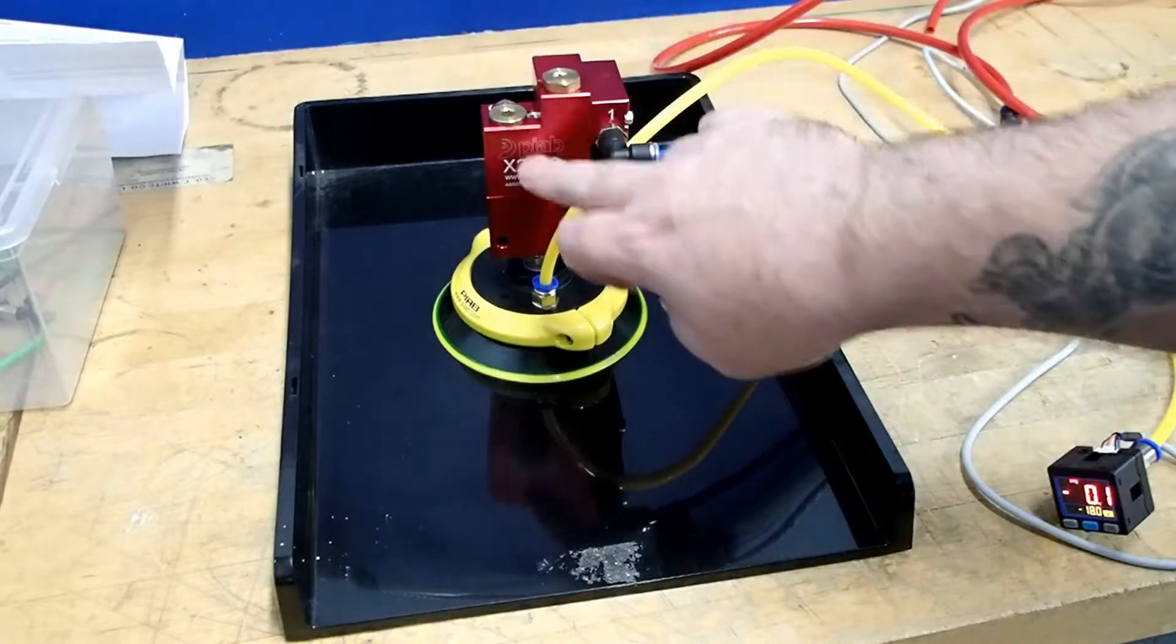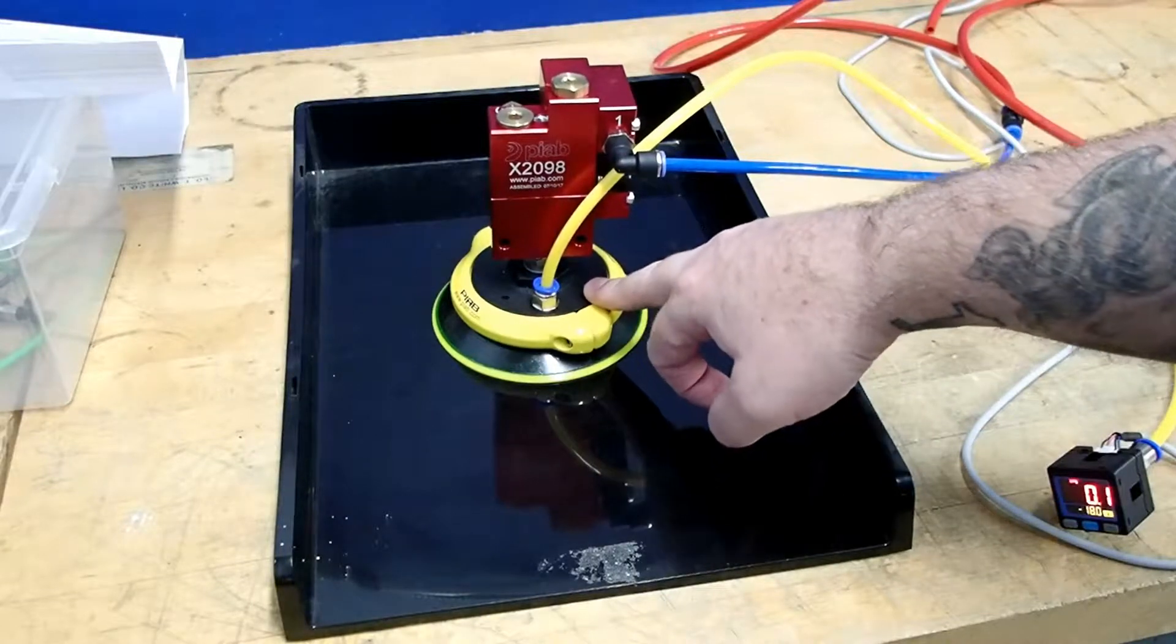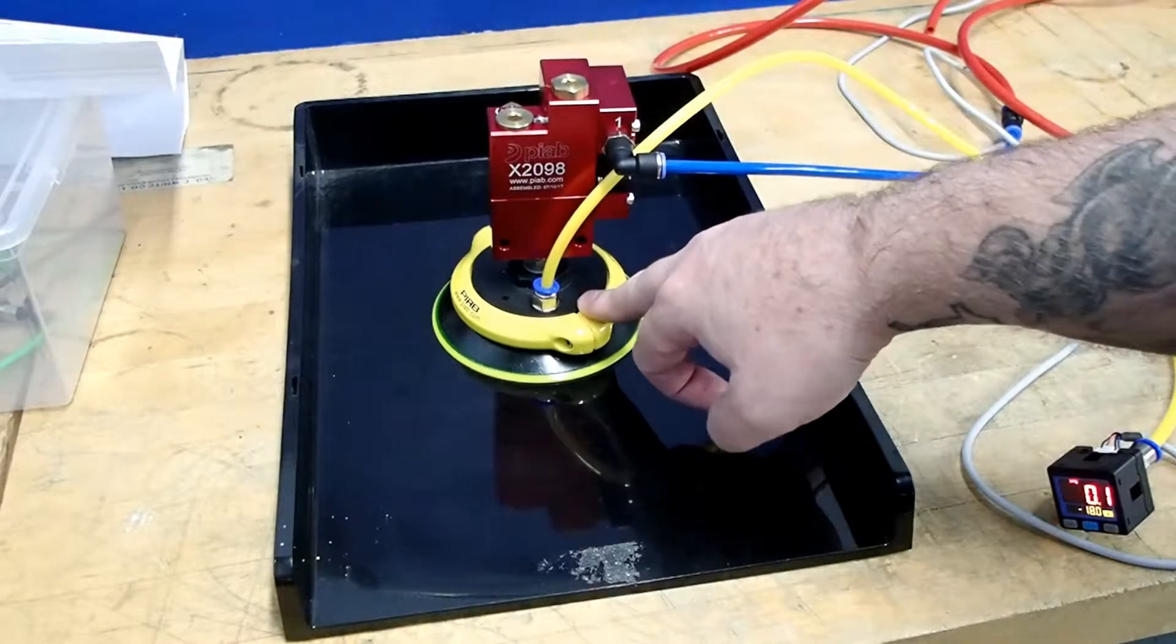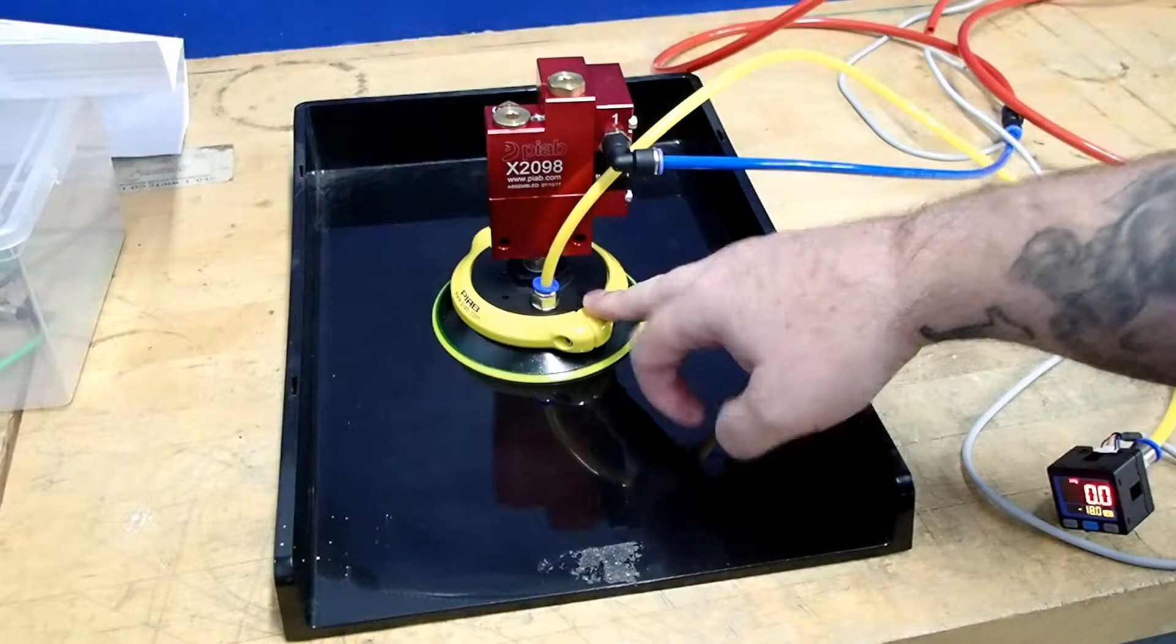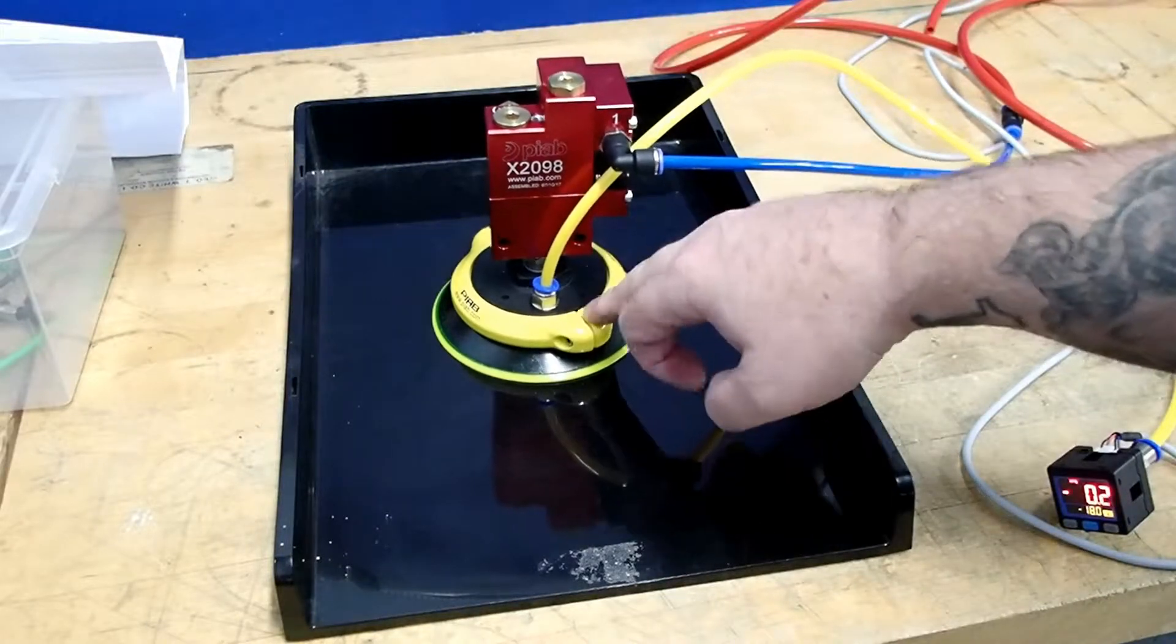This unit also has a vacuum check valve so once vacuum is achieved and air is turned off in an emergency situation, we're going to be able to maintain the hold on our part.